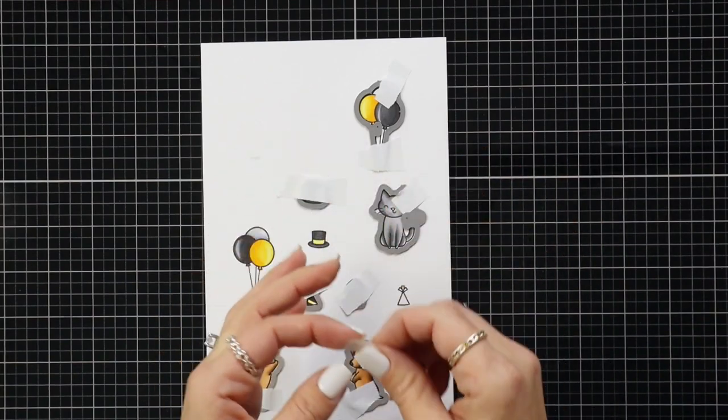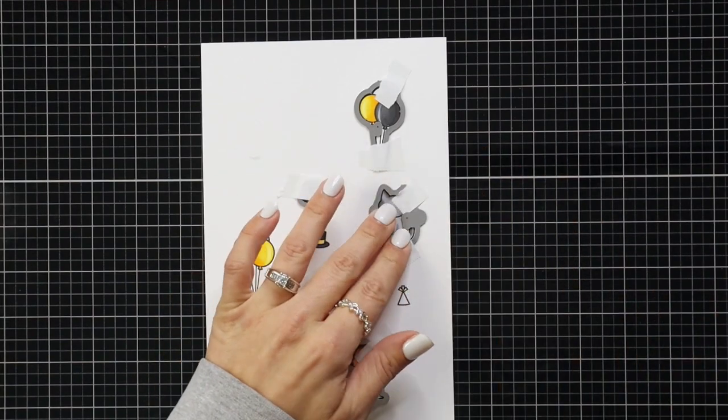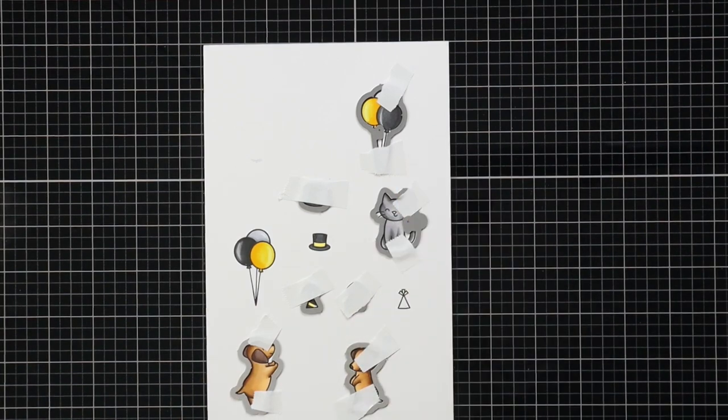After everything is all colored in I'm going to line up the coordinating dies, hold them in place with the post-it tape and die cut those out.